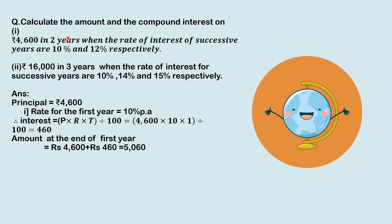The second question: calculate the amount and compound interest on (a) 4,600 in 2 years when the rates of interest for successive years are 10% and 12% respectively, and (b) 16,000 in 3 years when the rates of interest for successive years are 10%, 14%, and 15% respectively.